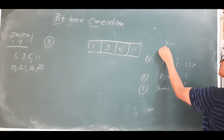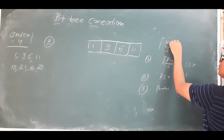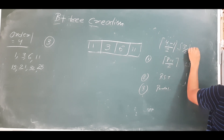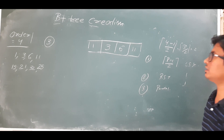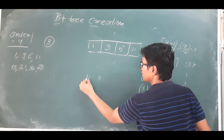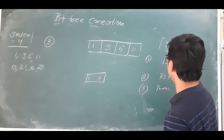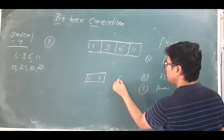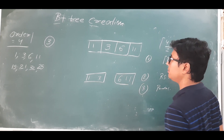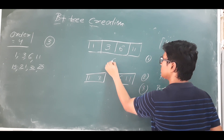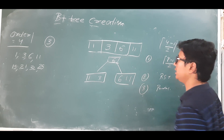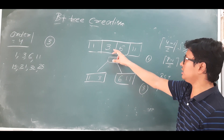4 minus 1 by 2 = 3 by 2 = 2. So the first two elements should come in the left subtree — so 1 and 3 will come in the left subtree. Remaining elements should come in the right subtree, and the minimum element from the right subtree should come in the parent node. So we have constructed the B+ tree.